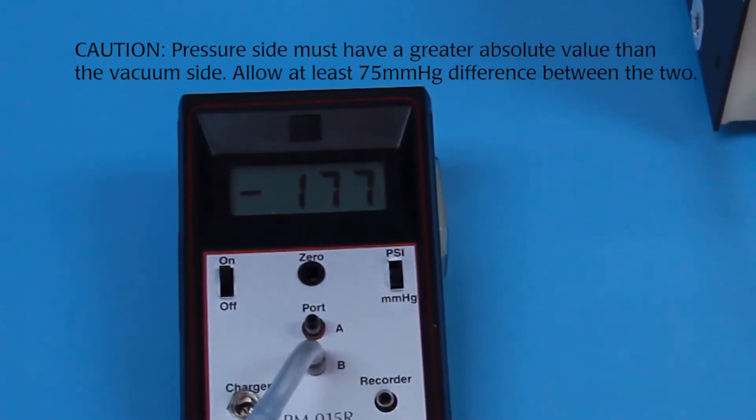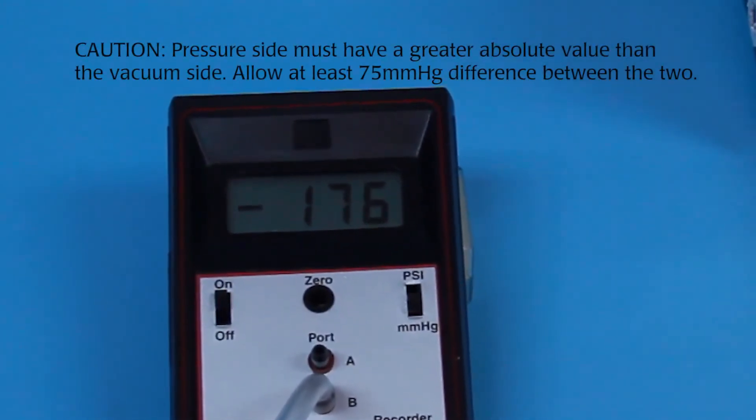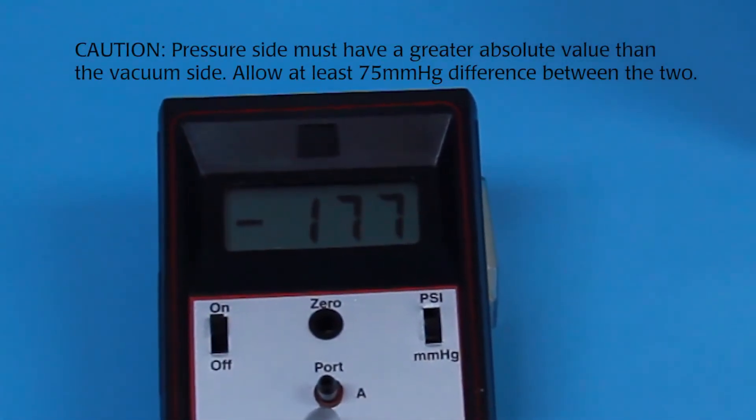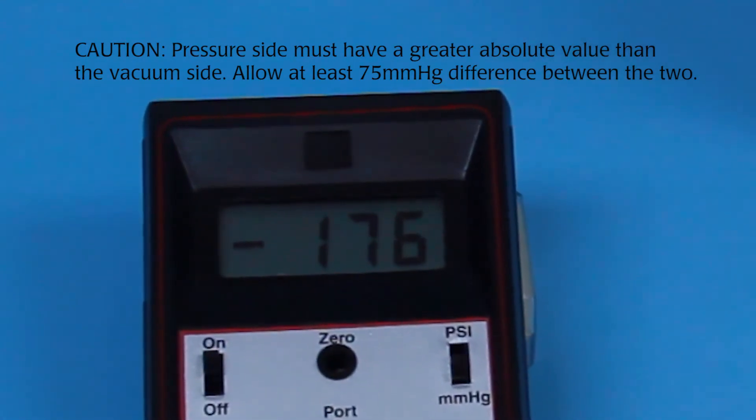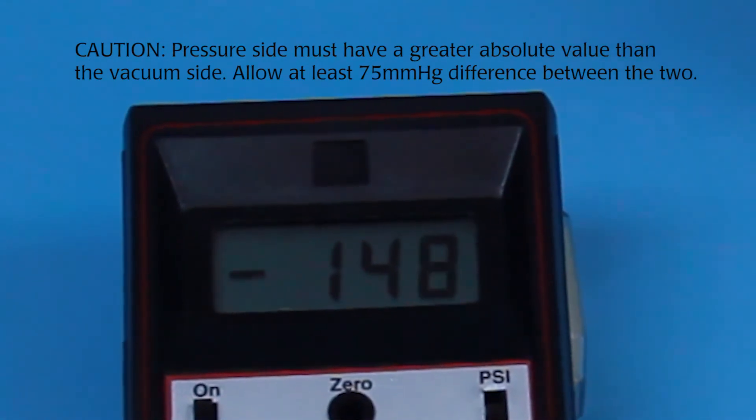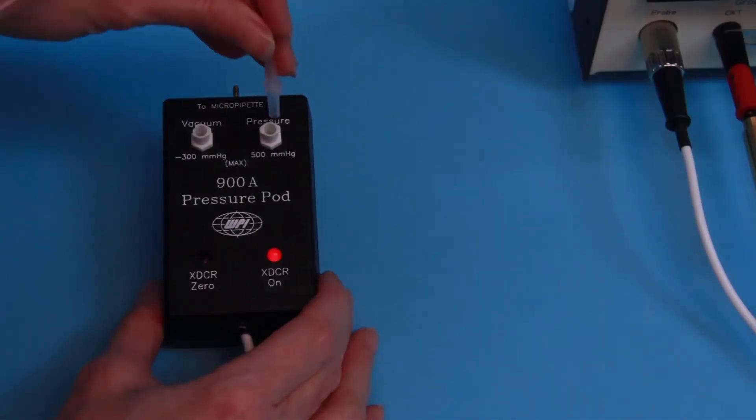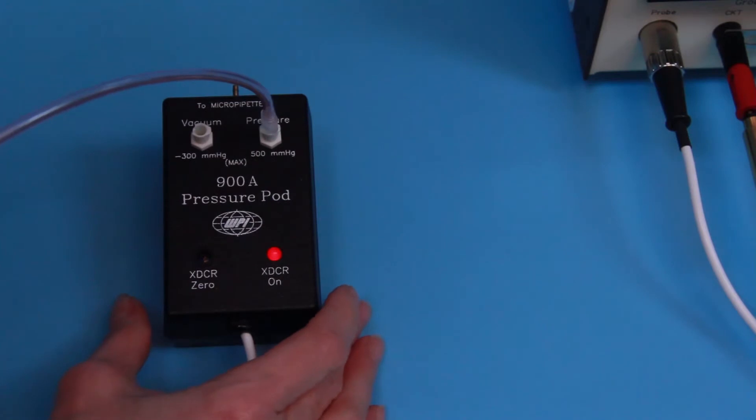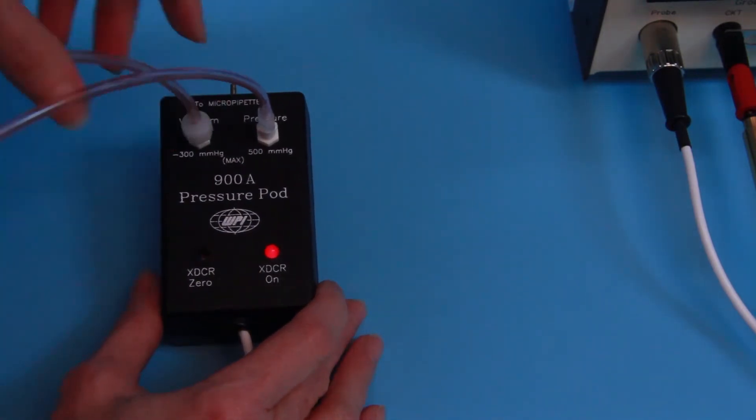However, it is crucial that the pressure side always be of a greater absolute value than the vacuum side and that there is a minimum of 75 millimeters of mercury difference between the pressure and the vacuum sources. Connect these related pressure and vacuum sources to their respective input ports on the pressure pod.